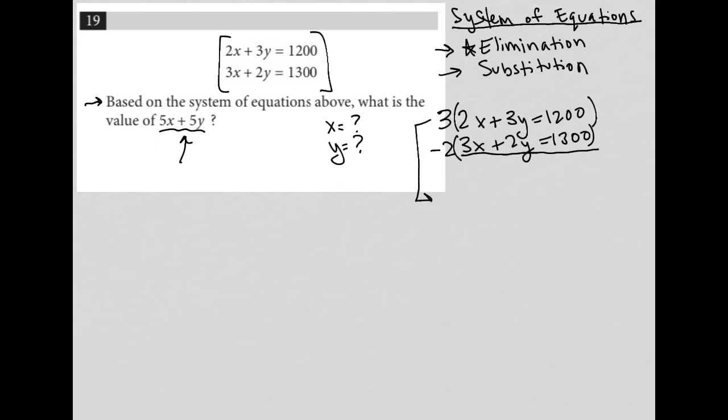When I multiply by 3, I get 6x plus 9y equals 3,600. And when I multiply by negative 2 for the bottom equation, I get negative 6x minus 4y equals negative 2,600.